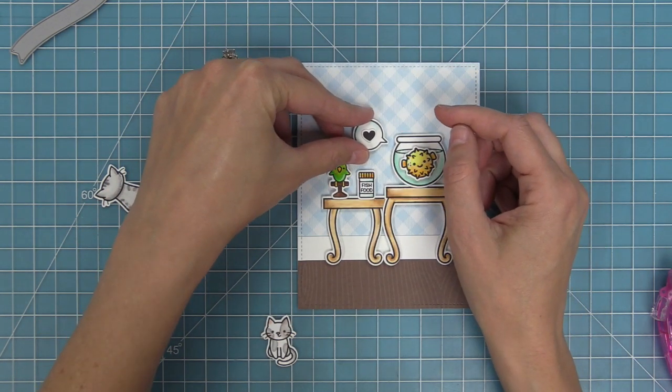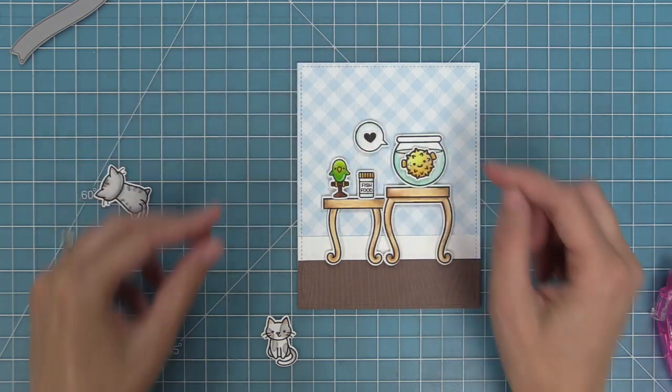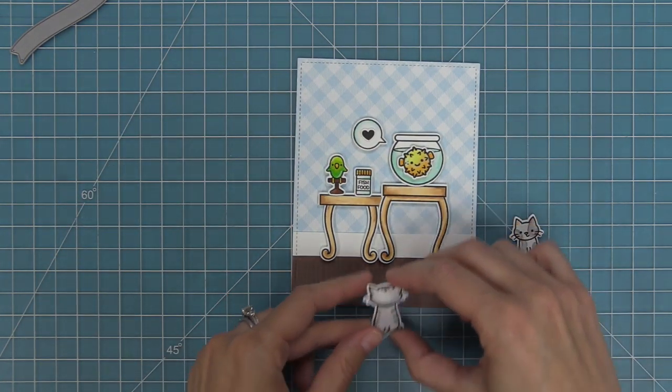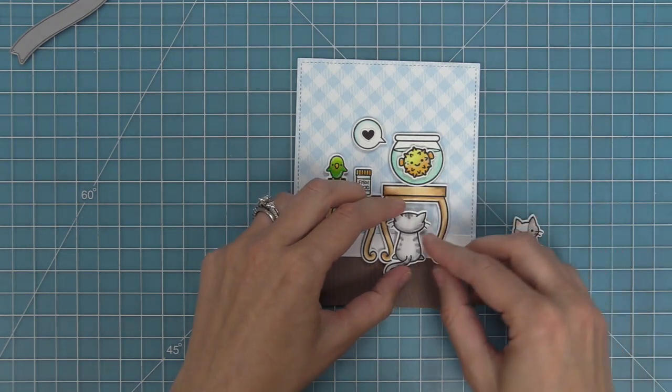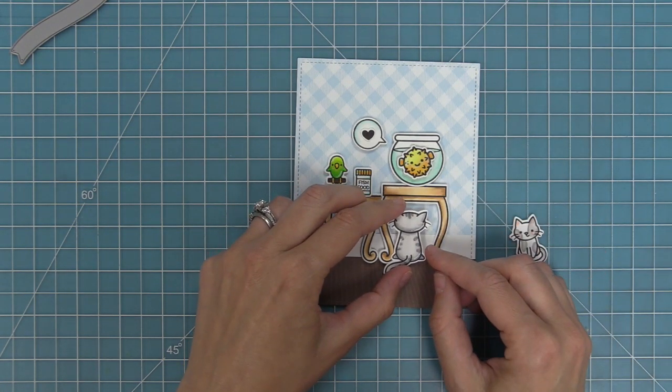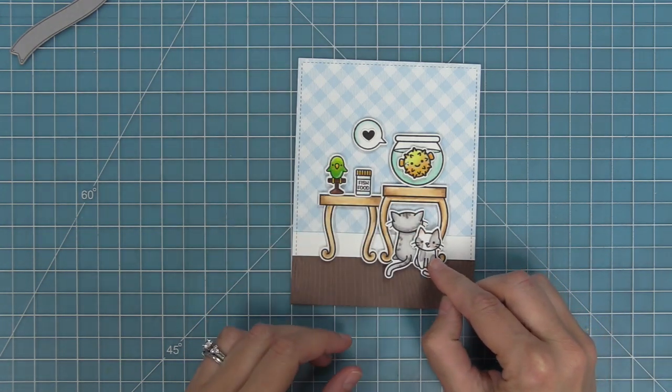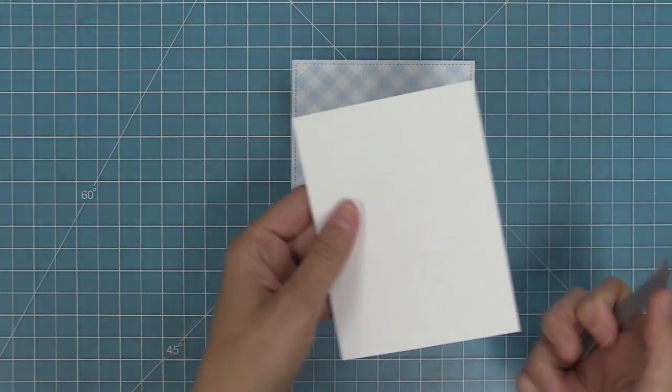Next we'll add that speech bubble with the heart and then we can start to work on adding our cats. I love the idea of the cat just staring right up at the fishbowl—it cracks me up every time. We're going to layer that on with some foam squares. Then we're going to take our cute little spotted cat, the one from Say What Pets, and we're going to layer him over top, but I love that he's looking right at you on the card.